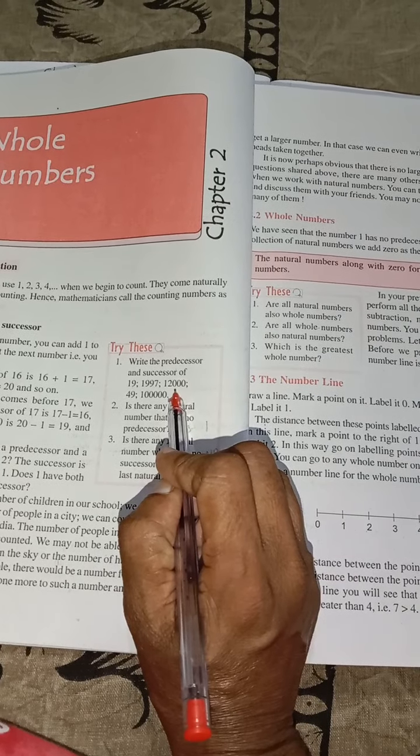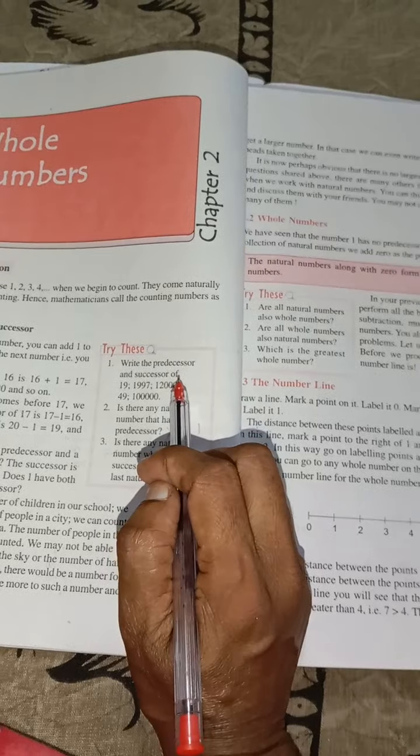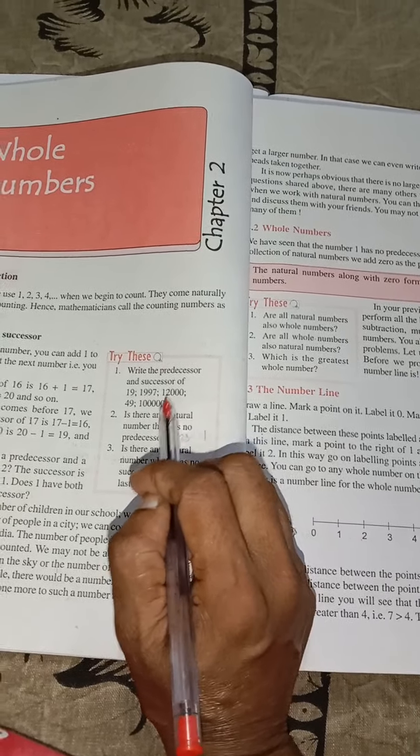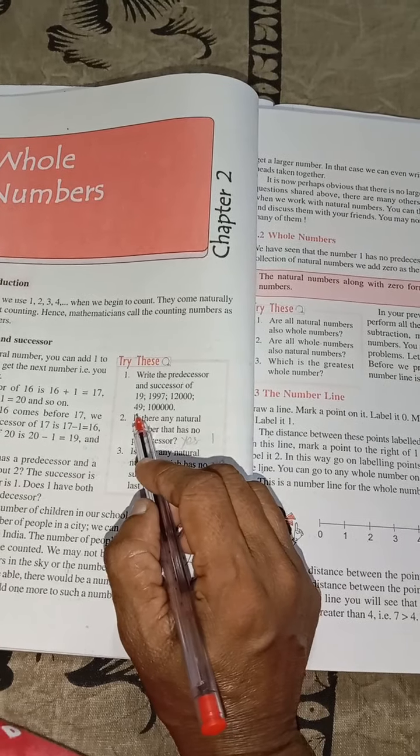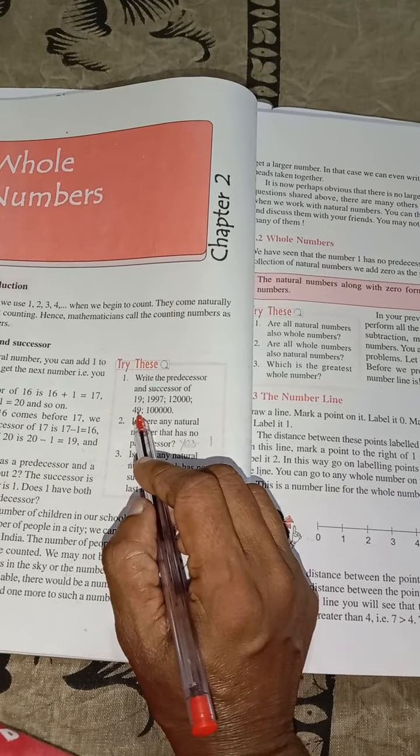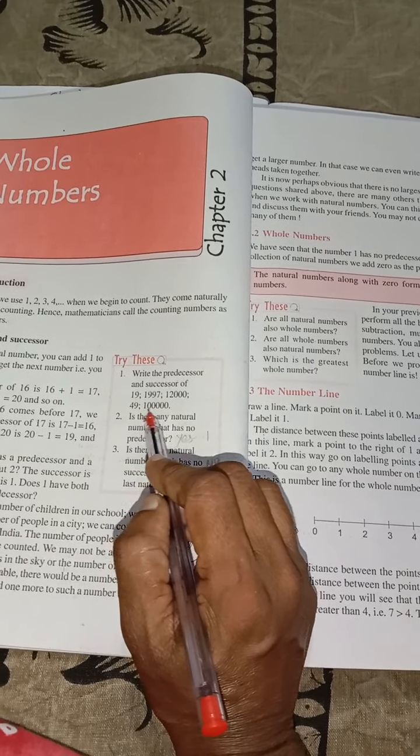12,049. What is the predecessor of 12,049? 11,999 is the predecessor. Successor is 12,001. And 49, predecessor is 48 and successor is 50.